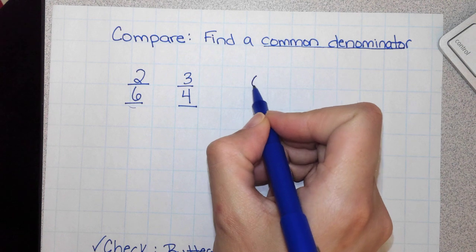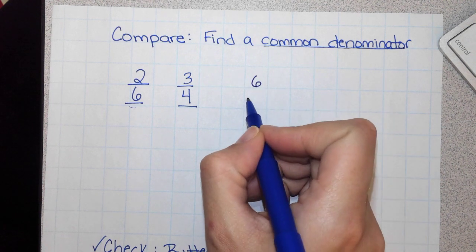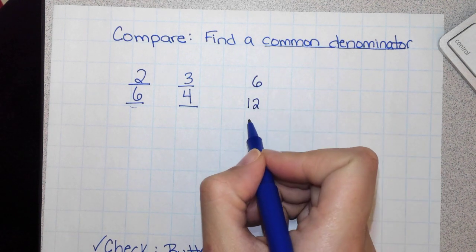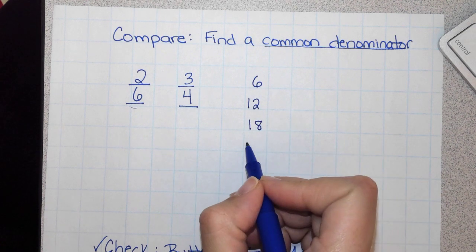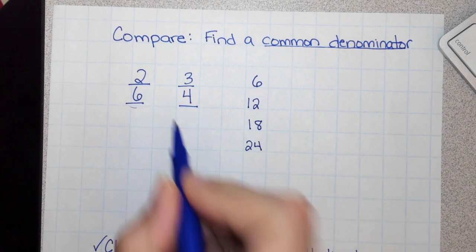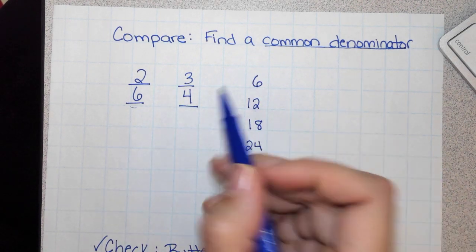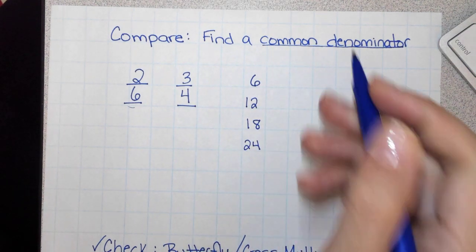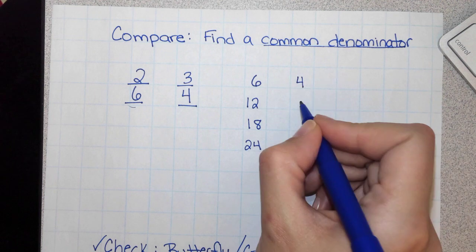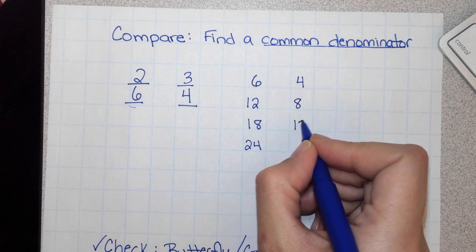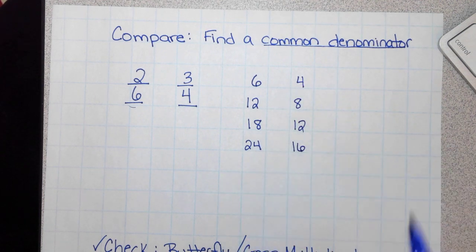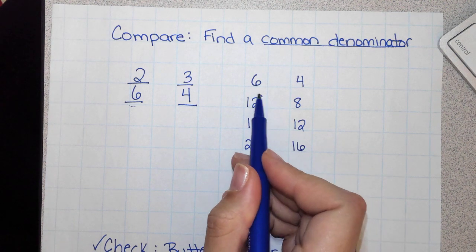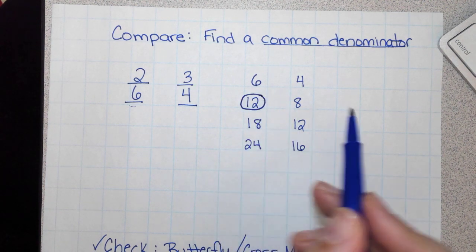So I'm going to list the multiples of 6: 6, 12, 18, 24. Then I'm going to list the multiples of 4 until I find one that is the same: 4, 8, 12, 16. Now which number do they both have in common? They both share 12.